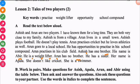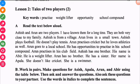Oroon has a sister. Her name is Alpona. She does not like cricket. She is a swimmer — she swims.